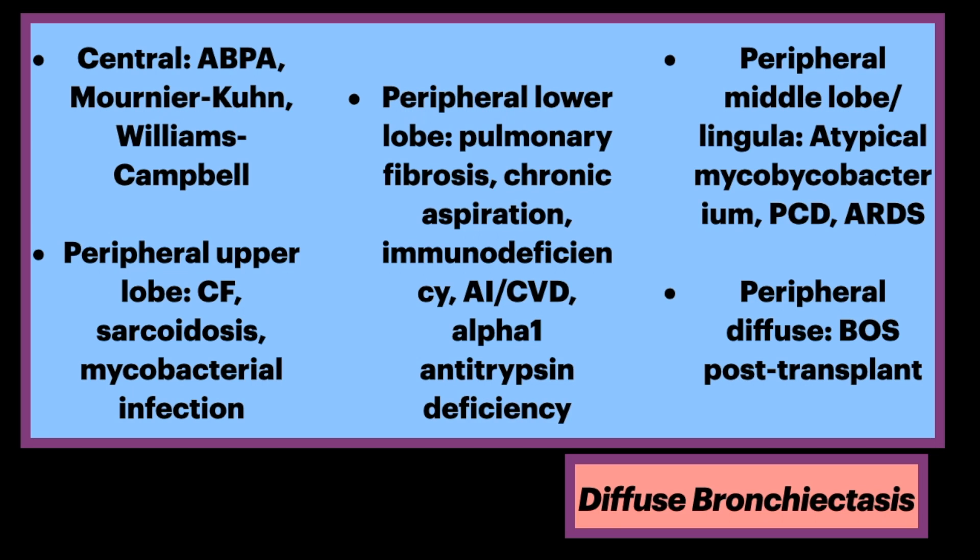For peripheral lower lobe predominant diffuse bronchiectasis, think of pulmonary fibrosis including UIP and NSIP. Also think of chronic aspiration, immunodeficiency, autoimmune or collagen vascular diseases, and alpha-1 antitrypsin deficiency.